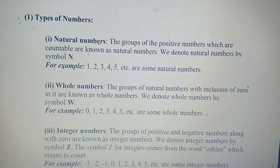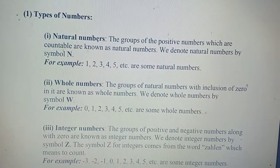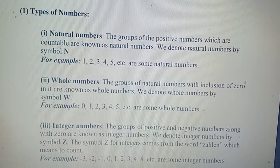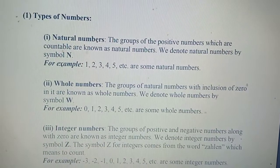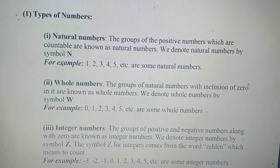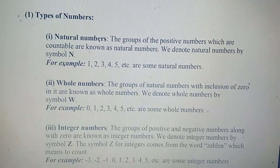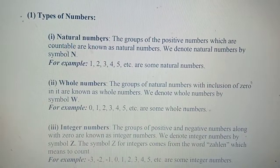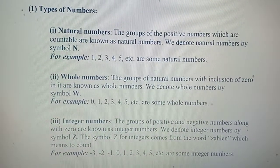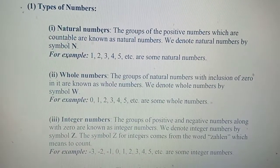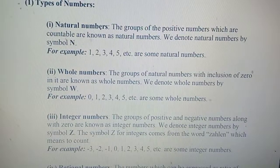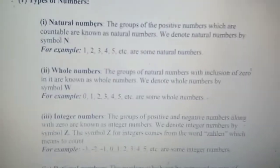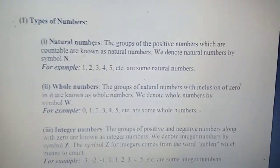Second are whole numbers. The groups of natural numbers with inclusion of 0 are known as whole numbers. We denote whole numbers by the symbol capital W. Here are examples of whole numbers: 0, 1, 2, 3, 4, 5, and so on.